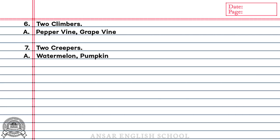Number 8: 2 underground stems. Answer: Potato, Ginger.